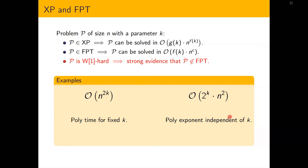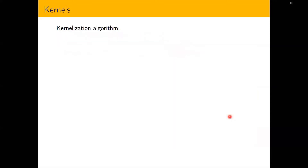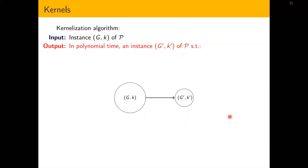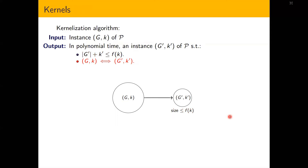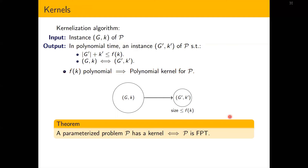A parameterized problem P being W1-hard is strong evidence that P is not in FPT. The canonical W1-hard problem is the k-clique problem. A kernelization algorithm for a problem P with input digraph G and parameter k receives an instance (G, k) and outputs in polynomial time an equivalent instance (G', k') whose size is bounded by a function dependent only on k. If this function f is polynomial, this is a polynomial kernel for P. The classical result states that a parameterized problem P has a kernel if and only if P is FPT.